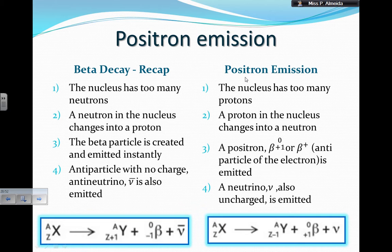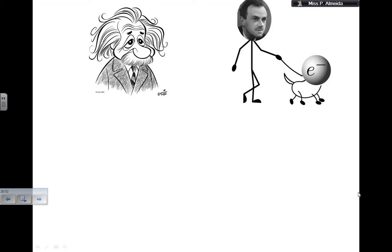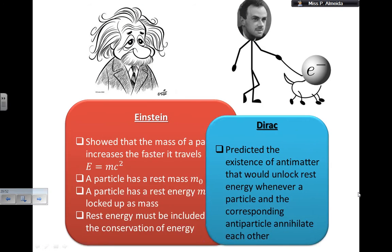Quick recap: beta decay — nucleus has too many neutrons, neutron changes into a proton, you get a beta particle and an anti-neutrino. Positron emission — nucleus has too many protons, proton changes into a neutron, you get a positron and a neutrino. The way you get the numbers is the same as before — see the stable and unstable nuclei video.